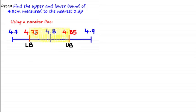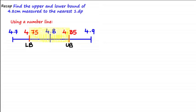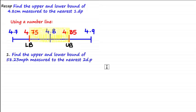So the midpoint of 4.7 and 4.8 is 4.75 giving us the lower bound, and the midpoint of 4.8 and 4.9 is 4.85 giving us the upper bound. Let's do some more examples — feel free to pause the video and have a go before I show you the solutions. Find the upper and lower bound of 58.23 miles per hour measured to the nearest two decimal places.